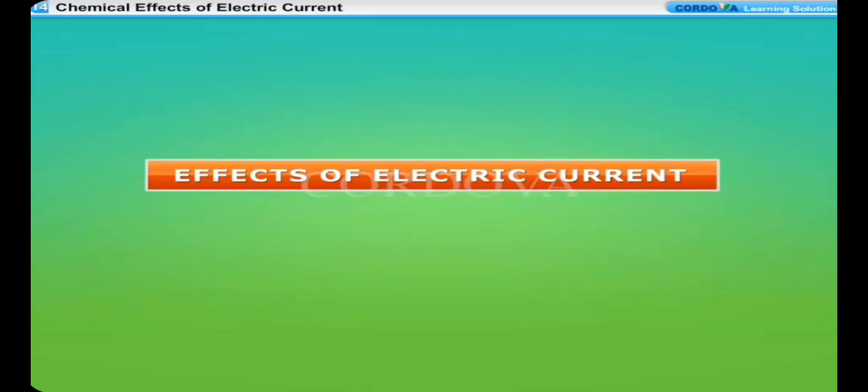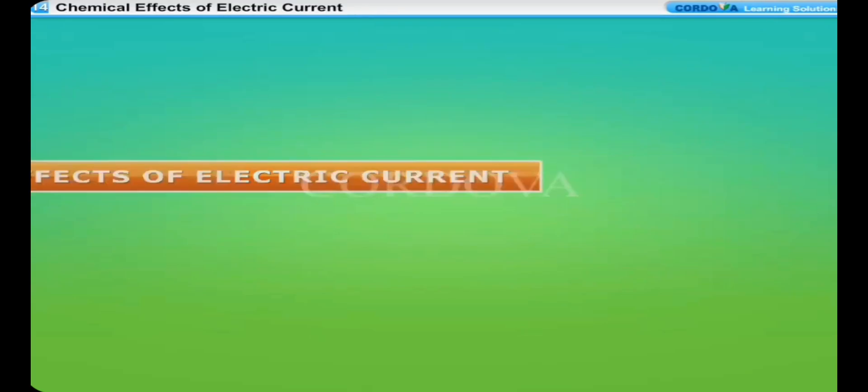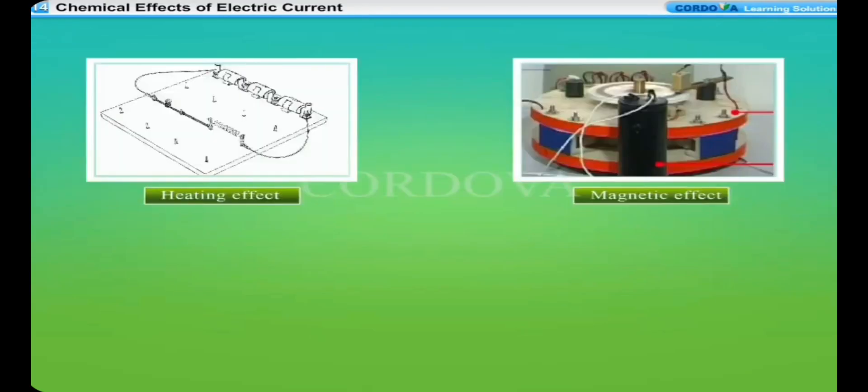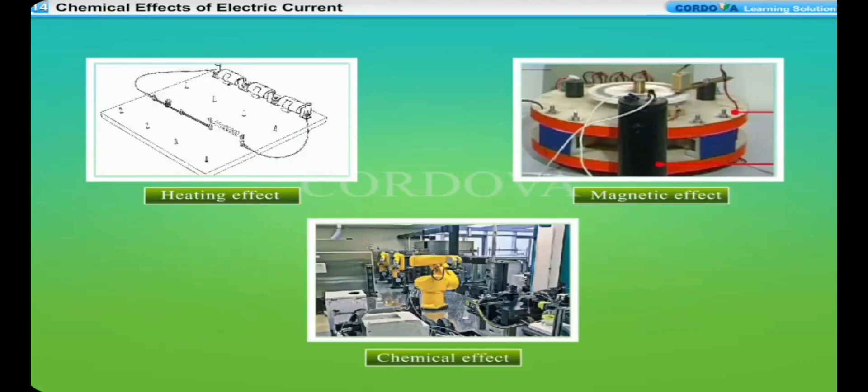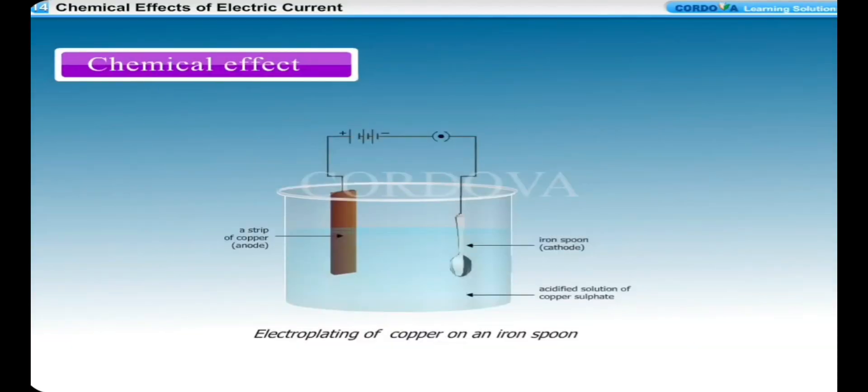An electric current can produce three effects: heating effect, magnetic effect, and chemical effect. When an electric current is passed through an electrolyte, the chemical reactions take place. This is called the chemical effect of electric current.